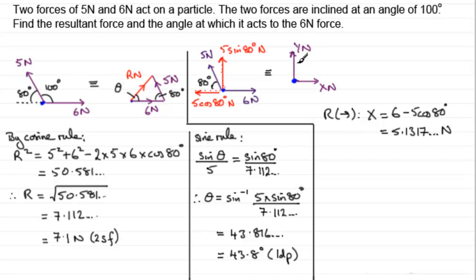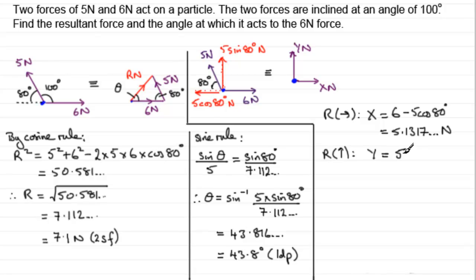To get the y force — the resultant force in the y direction — we resolve vertically. y equals 5 sine 80 degrees, since the 6 newtons and the horizontal component are perpendicular to the y direction and have no effect. Working that out on the calculator gives 4.9240 newtons.